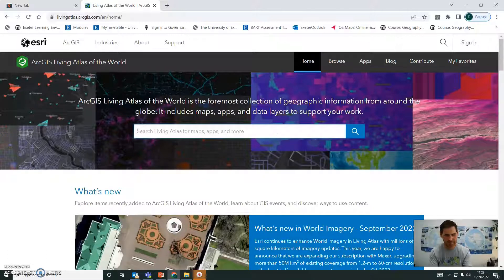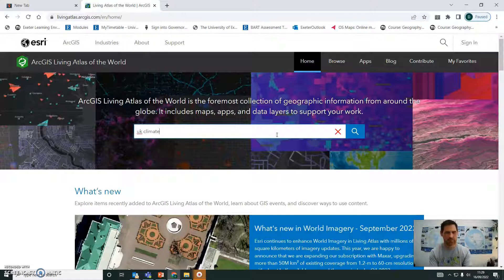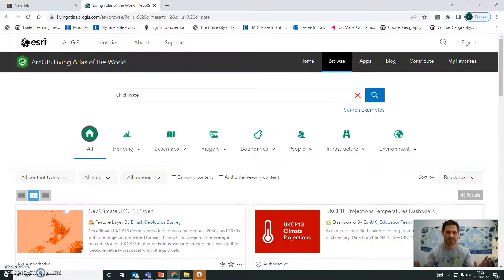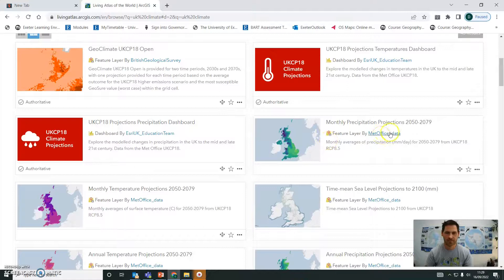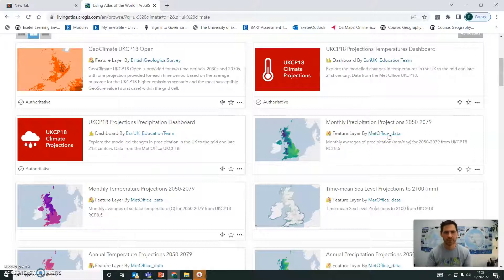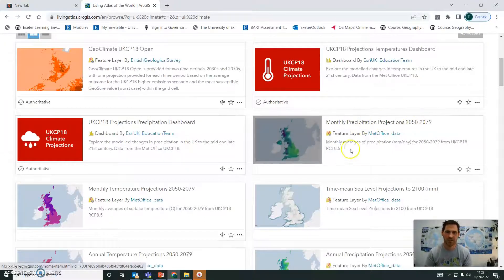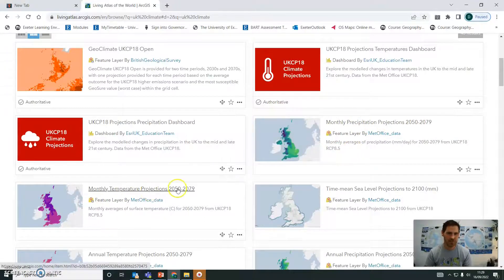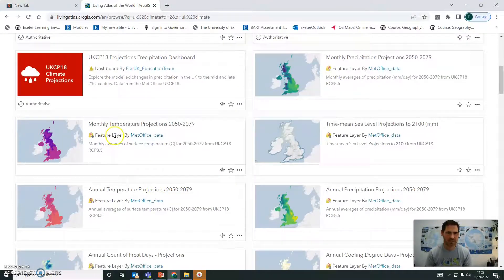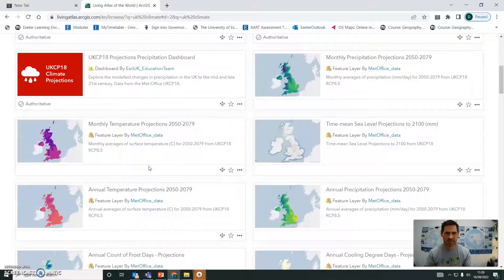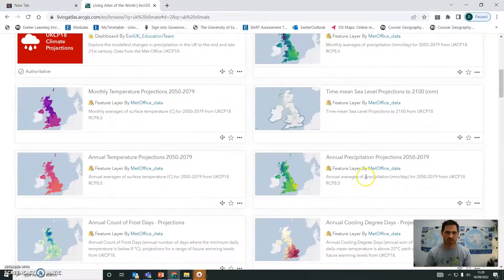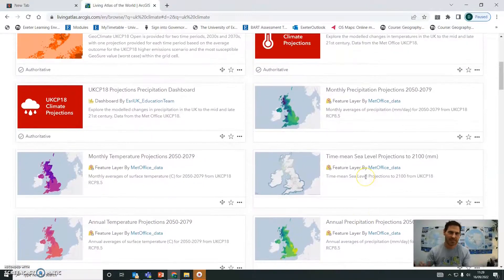And there's this fantastic data set that's just come out that is available to you. The Met Office have made their climate model data super accessible through ArcGIS online. So have a look at this. You've got monthly precipitation projections for the UK. You've got temperature projections, annual temperature projections monthly. So again, thinking about that seasonal scale, precipitation projections, what can you do with all these amazing projections?